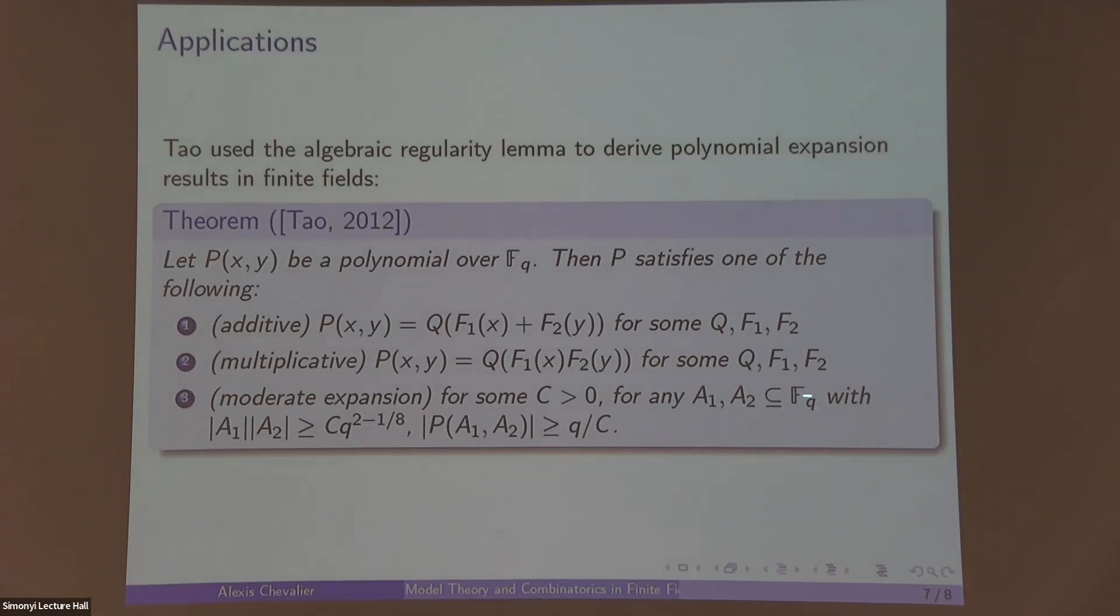For some constant, for any subsets A_1, A_2 of F_q which are sufficiently large, the size of the image of p applied to A_1 and A_2 is bigger than q over this constant. You can see that these are distinct by considering arithmetic or geometric sequences. So additive and multiplicative are never moderate expanders.